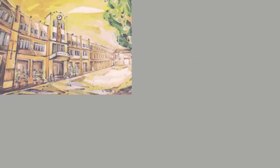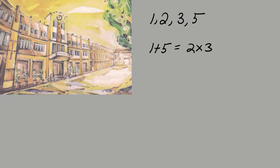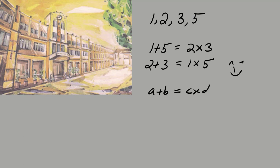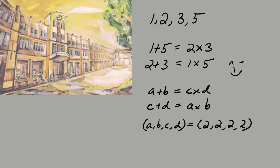When I was a student I liked to play with numbers. One day these four integers came to me and I found them very interesting: 1 plus 5 is 6, which equals 2 times 3, and 2 plus 3 equals 5, which equals 1 times 5. I tried to generalize this and write it as a plus b equals c times d and c plus d equals a times b, finding all possible solutions for a, b, c, d. You can verify there are only two such solutions.